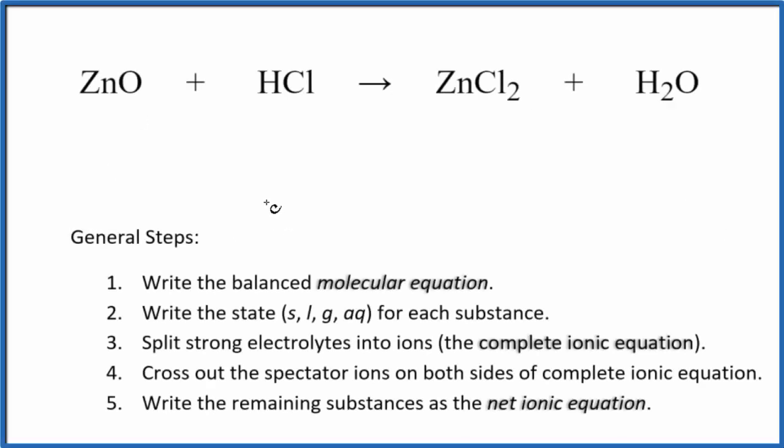In this video we'll write the balanced net ionic equation for ZnO plus HCl, zinc oxide plus hydrochloric acid. First we need to balance the molecular equation. I can see two chlorines here and just one here, so let's put a two in front of the HCl. Now we have two hydrogens, those are good. We have a zinc here, zinc here, oxygen, oxygen. We're done, that's the balanced molecular equation.